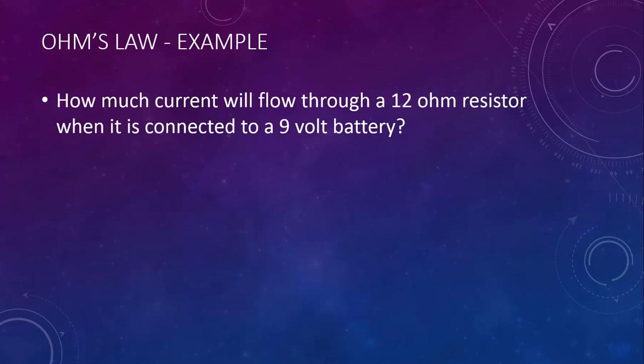Let's take a look at an example. How much current will flow through a 12 ohm resistor when it is connected to a 9 volt battery? We'll start with the equation from our reference table. We can substitute in the 12 ohms and the 9 volts, and we can find that the current would be 0.75 amps.